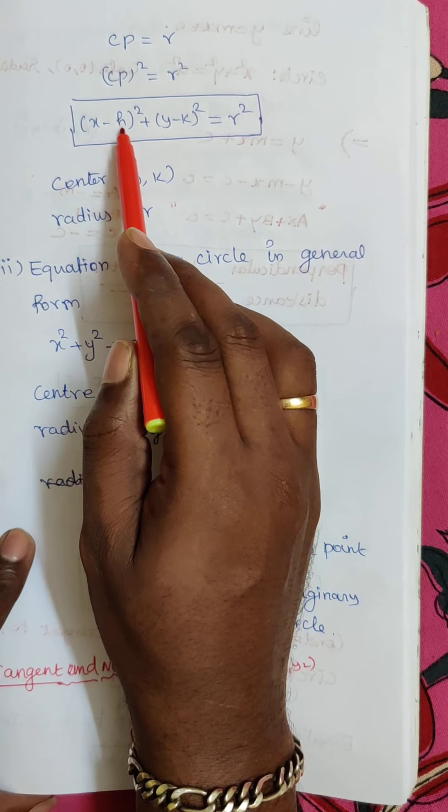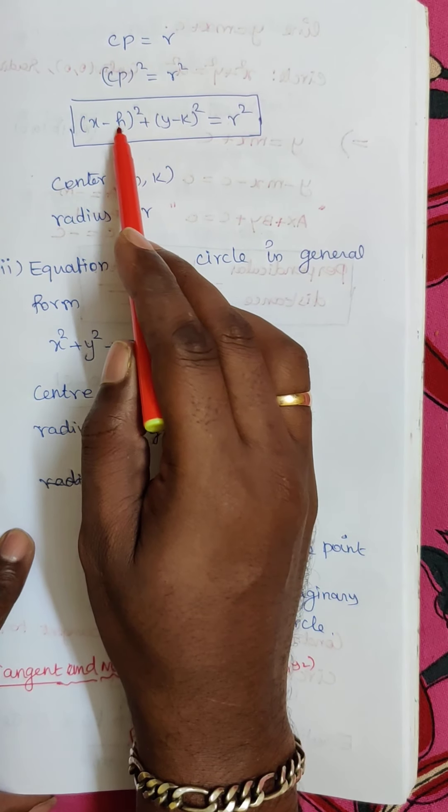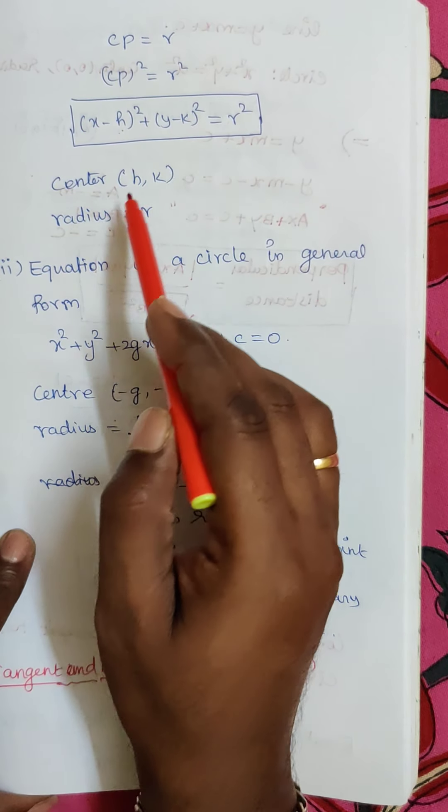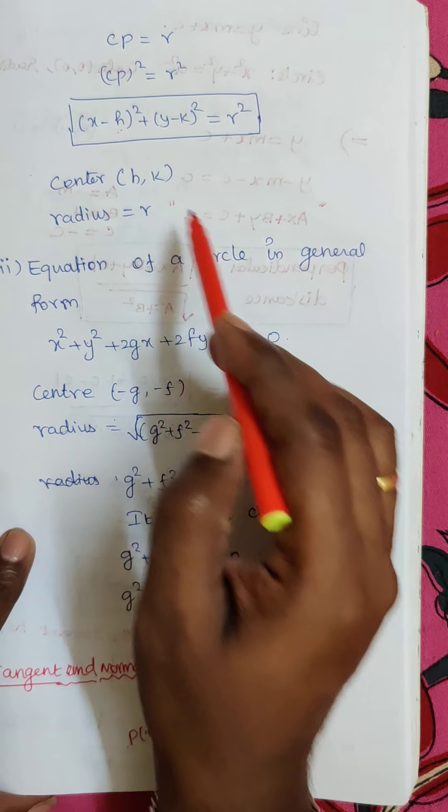So here, center is (h, k) and radius is r, giving the equation (x − h)² + (y − k)² = r².